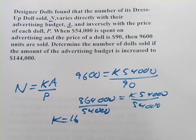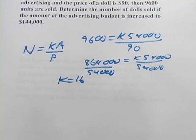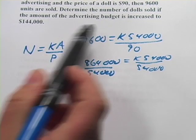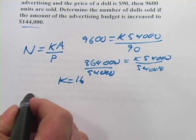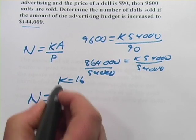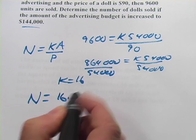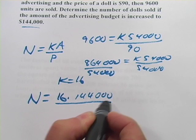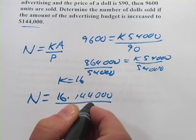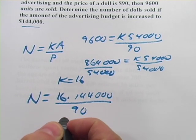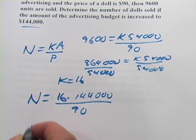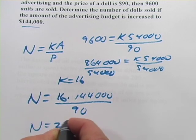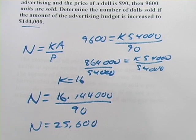Now we can go on to the next part. It says, Determine the number of dolls sold. So we're looking for N here. If the amount of the advertising budget is increased to $144,000. So we're looking for N. We have K now. It's 16. The advertising budget is $144,000. And the price of the doll is still 90. So we just crunch that away. 16 times $144,000 divided by 90. And you get $25,600 sold. So that's a little bit about joint and combined variation.